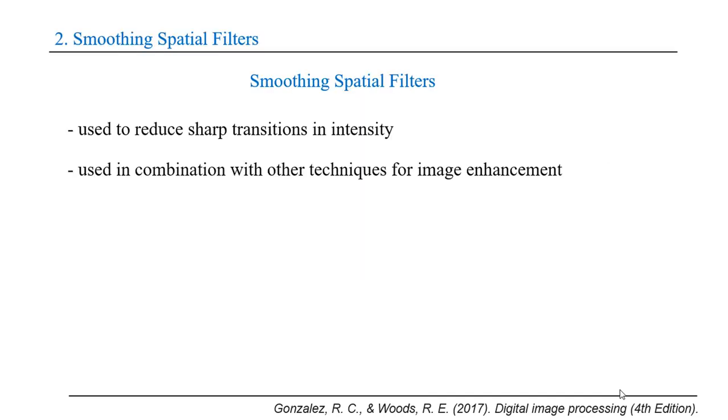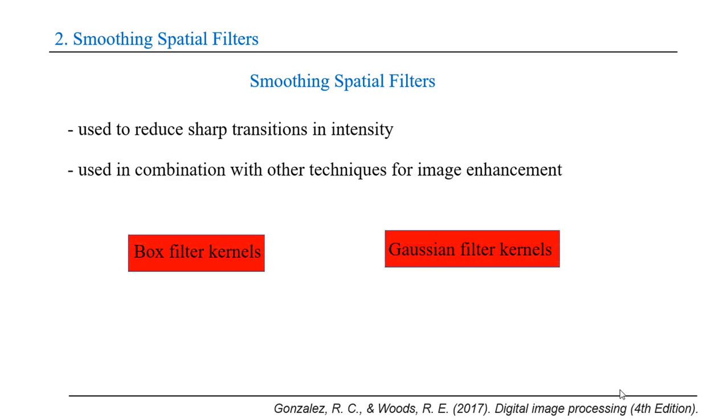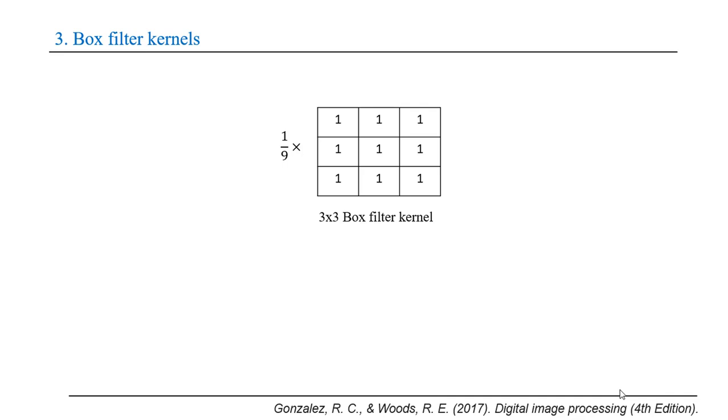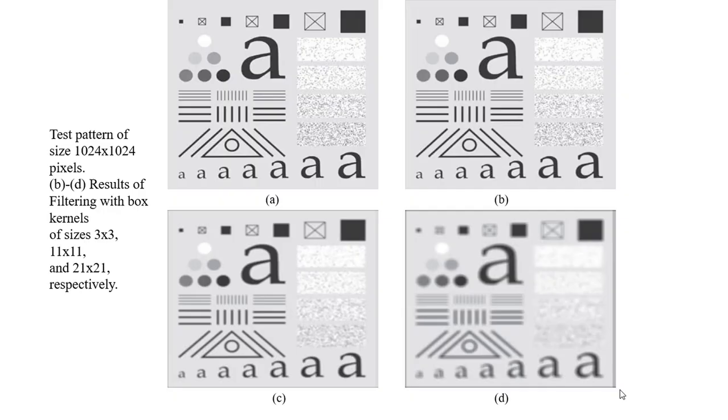The most common in spatial filtering are smoothing filters, which are used to reduce sharpness in images or with other techniques for image enhancement. We have two kernels for smoothing: the first one is the box kernel and the other is Gaussian. Here is an example of a box kernel, a 3×3 box filter kernel. This figure shows the result of applying a box filter with different sizes.